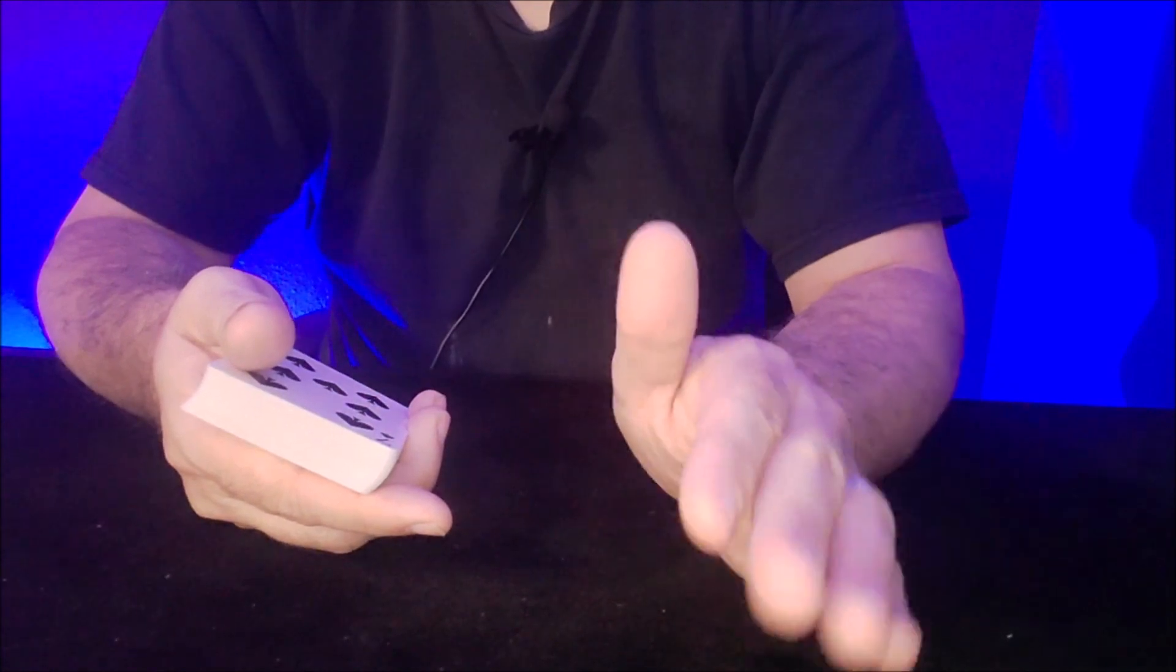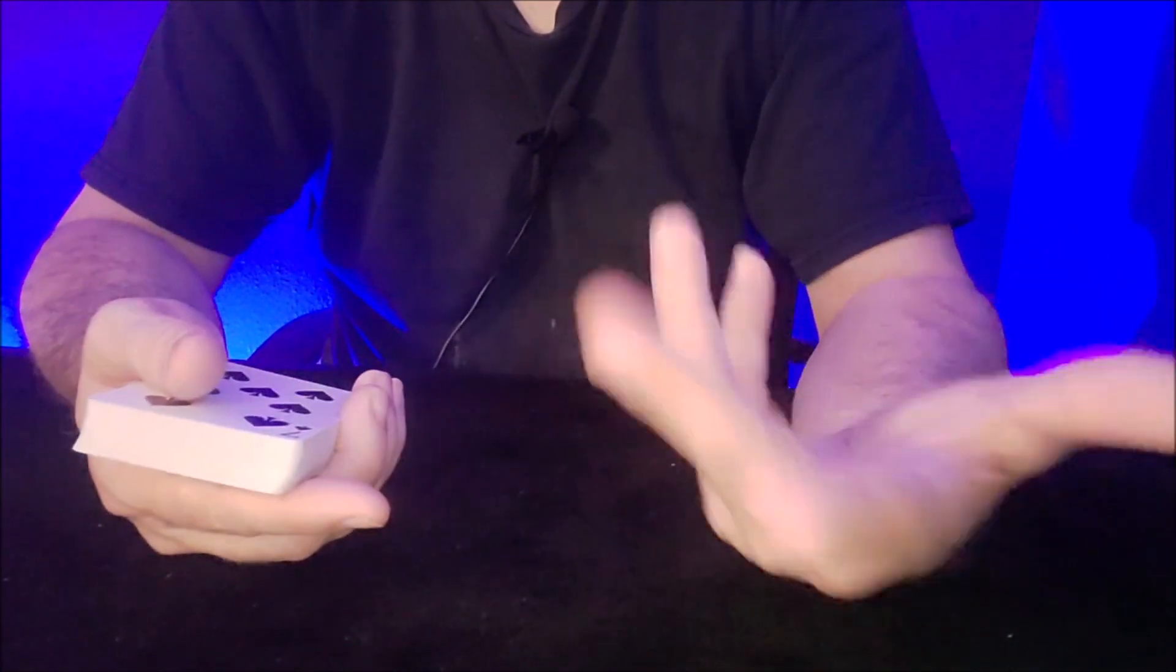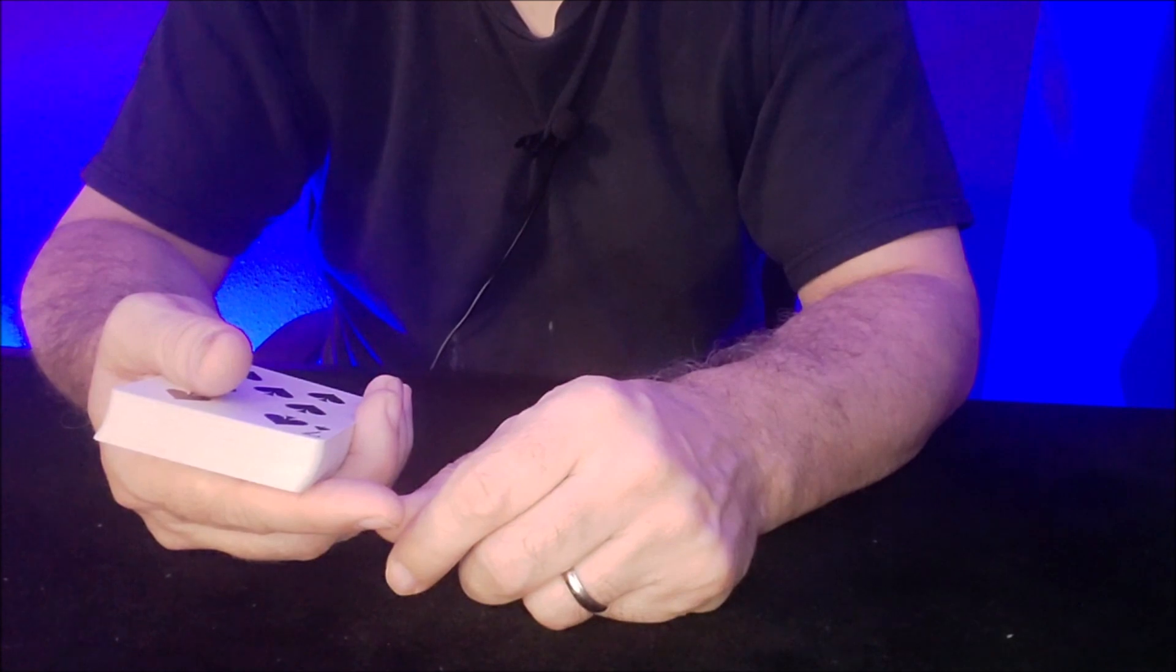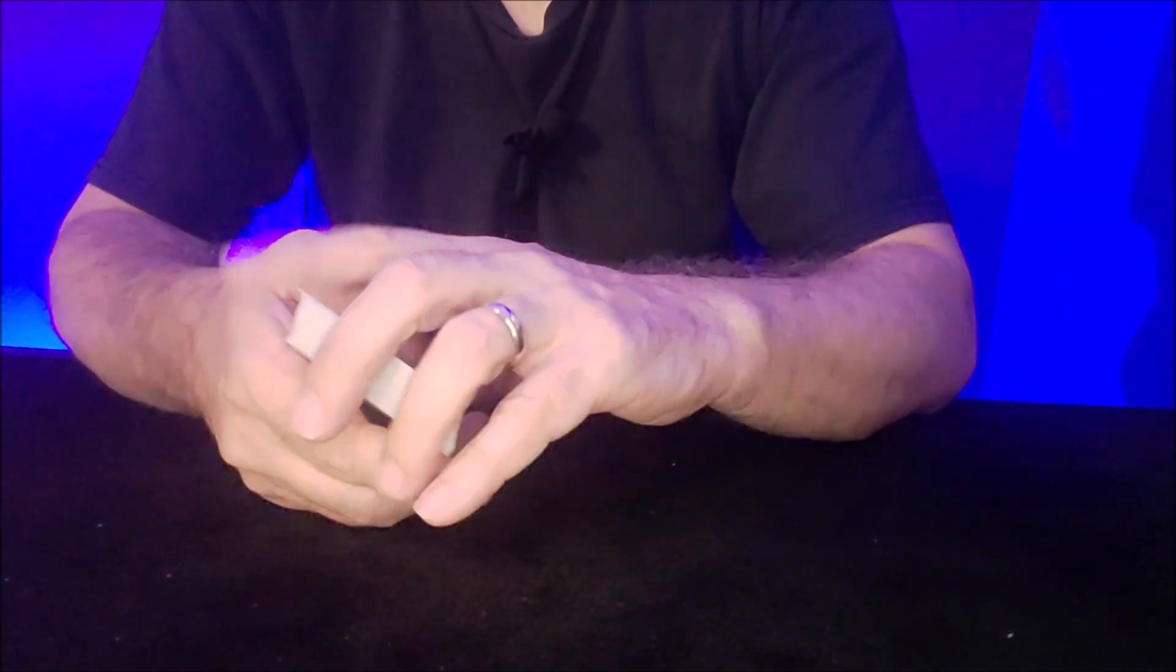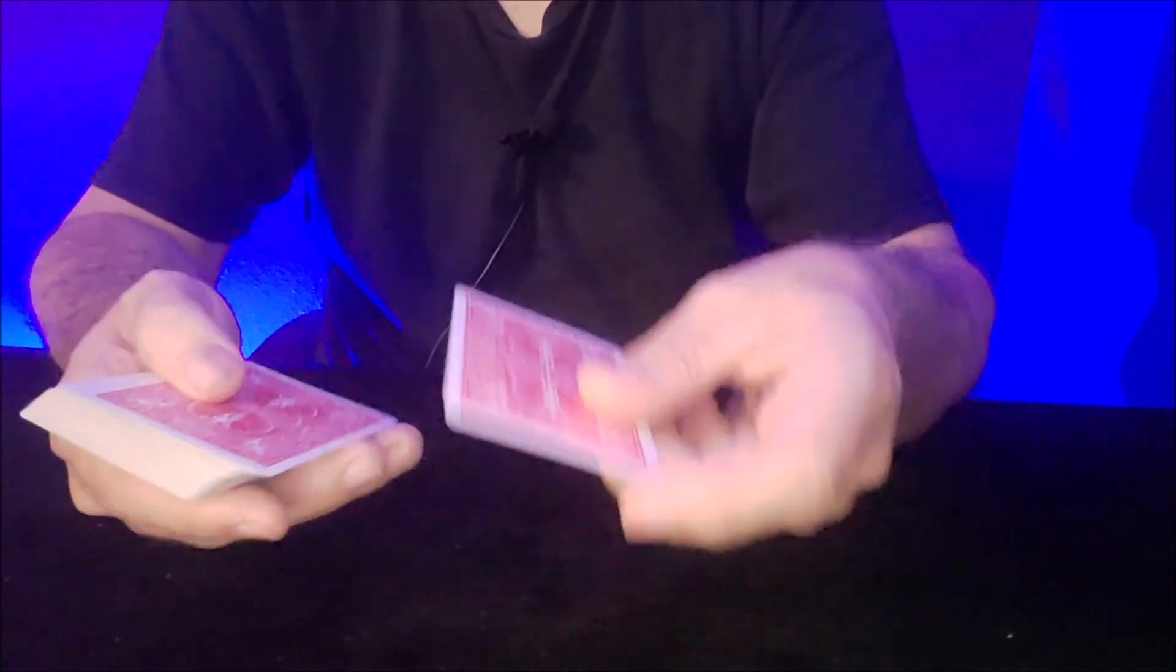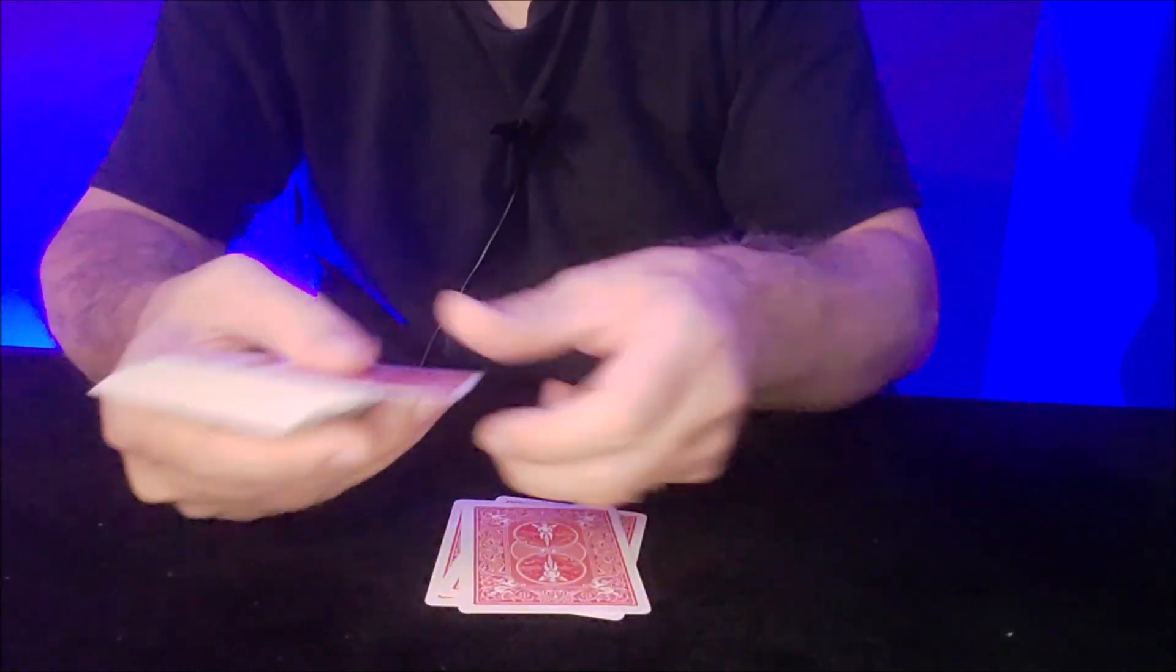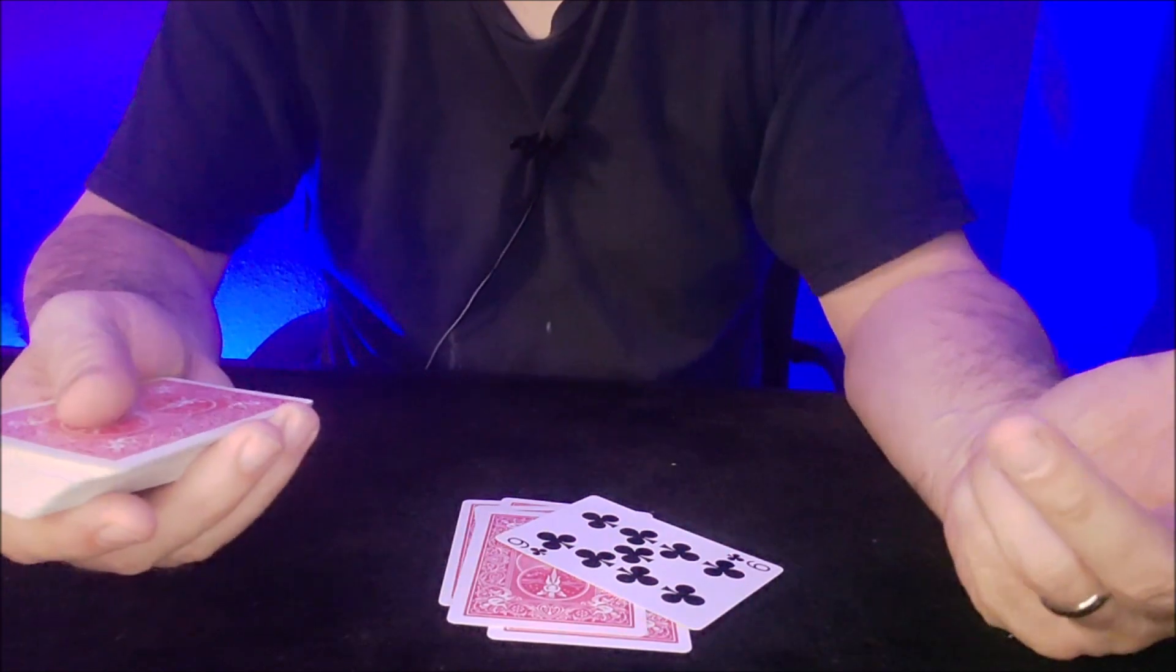So now it becomes any card at any number because they called out spades. What happens if they don't call out spades? It doesn't matter. If they say clubs, oh really? Just say mine's diamonds. And the conversation just continues. Turn it over and you're going to count down any card at any number. One, two, three, four, five, six, seven. And then there's their card.